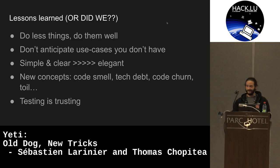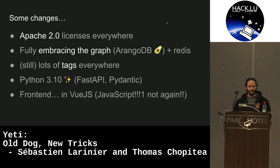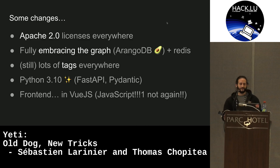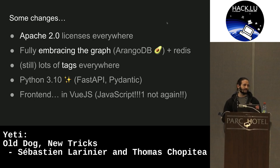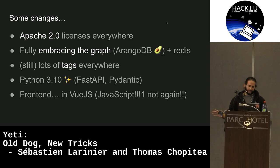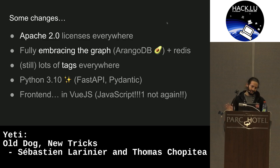Testing — I know it's unsexy — was a real lifesaver when we had to commit and merge many changes with confidence. New changes this time: we're going full Apache 2.0 licensing everywhere. We're using ArangoDB, also licensed Apache 2.0, which is a graph database — and we're fully embracing its graph capabilities. We're still using Redis and still using tags, which worked very well the first time. We're using Python 3.10.